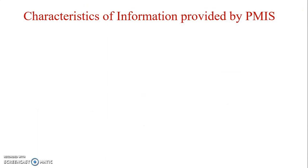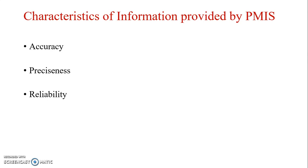Now let's see some important characteristics of information provided by PMIS. It should have accuracy, which signifies that PMIS should provide error-free information. Preciseness implies that information in PMIS should be relevant and exact. Reliability refers to another important characteristic — any information in PMIS should come from a reliable source. And the last is simplicity, which helps the project team in interpreting and using information easily.